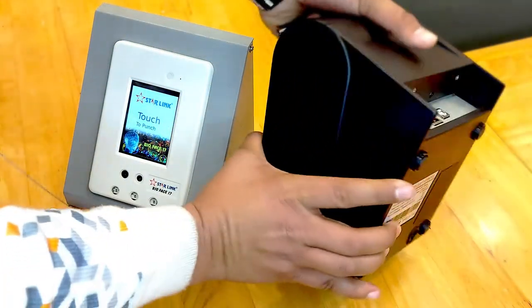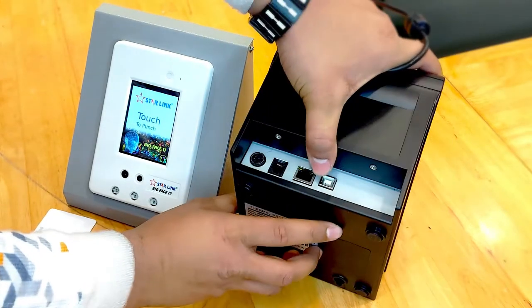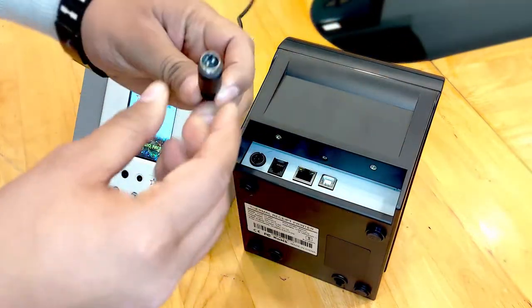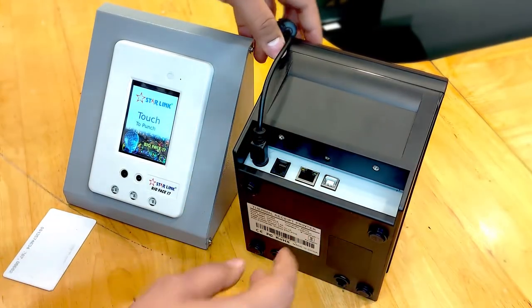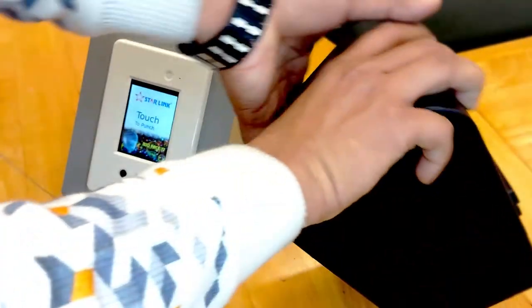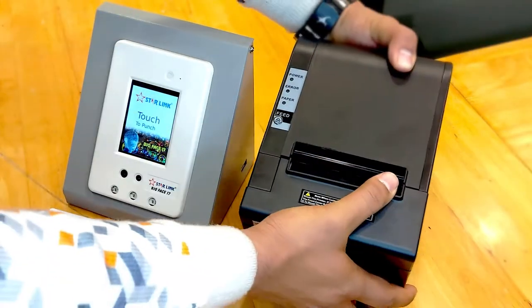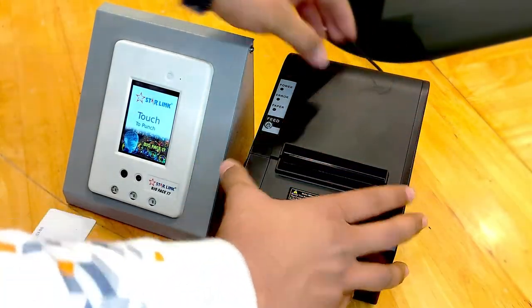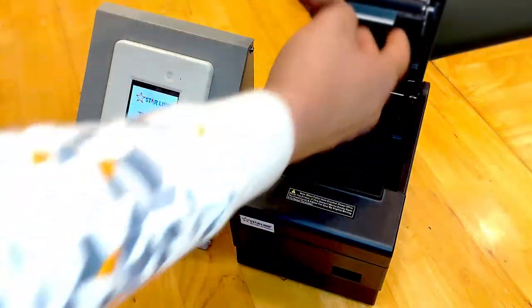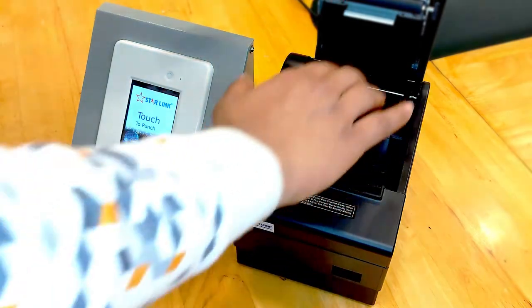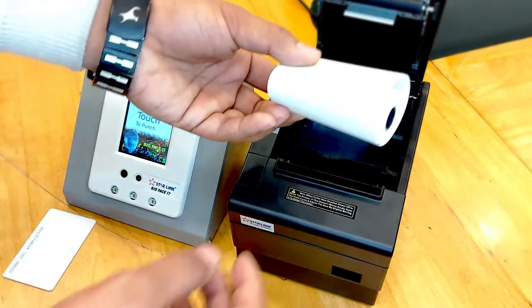Now the second step is to insert roll in this. For that, this is the button, push this and this will open the lid. And you have to insert roll in this. This is the roll, take this, take a little piece outside.